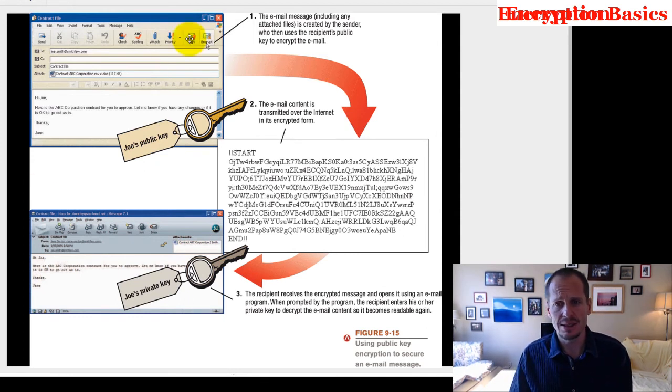We can take a quick look at this. The email message is created by the sender, who then uses the recipient's key to encrypt the email. The email content is transmitted over the Internet in encrypted form. The recipient receives an encrypted message and it opens using an email program. When prompted by the program, the recipient enters his or her private key to decrypt the email content so it becomes readable again.